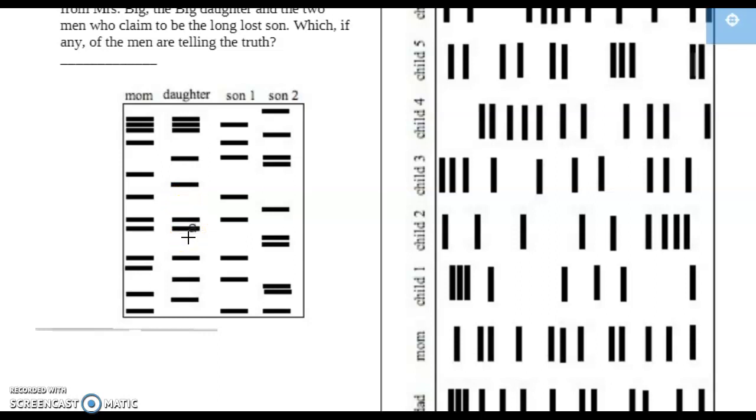So this came from Mom, that one came from Mom. So this is another one that would have had to come from Dad. And Son 1 has it, but Son 2 does not.